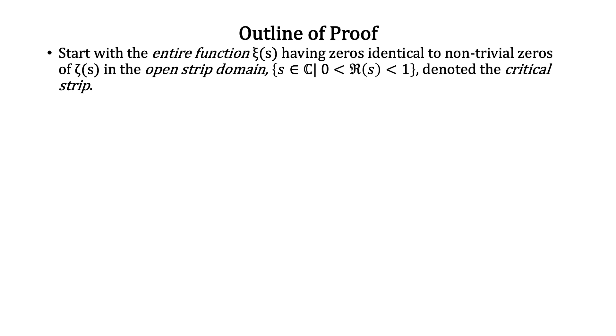Consider an outline of the proof. Start with the entire function ξ(s) having zeros identical to the non-trivial zeros of ζ(s) in the open strip domain, denoted the critical strip.